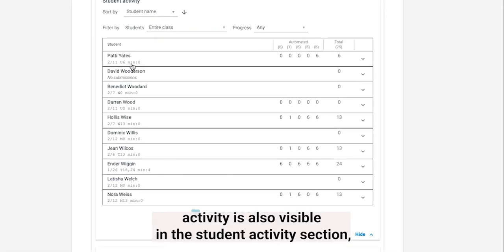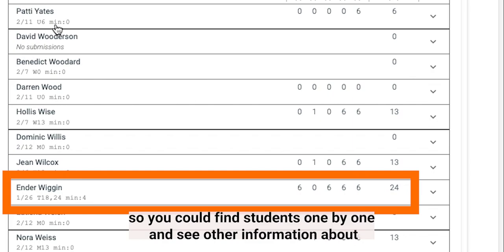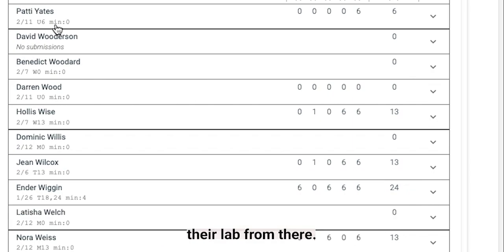The coding trail activity is also visible in the student activity section. It will show the entire class, and it's also searchable, so you could find students one by one and see other information about their lab from there.